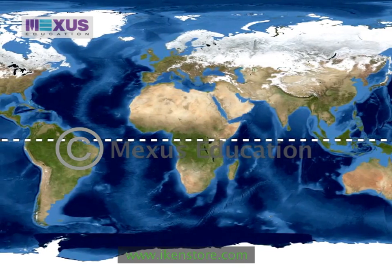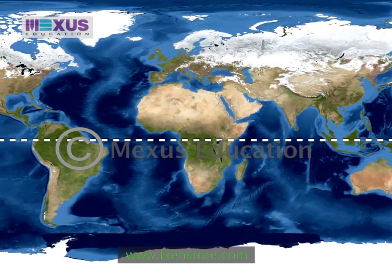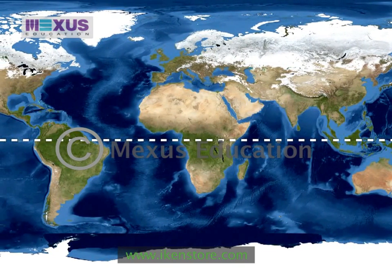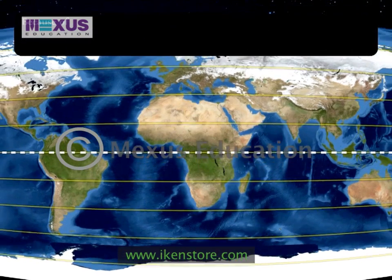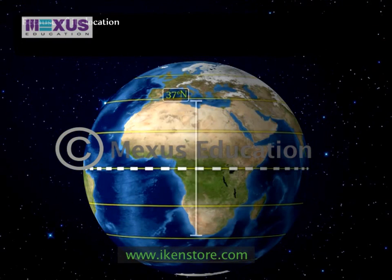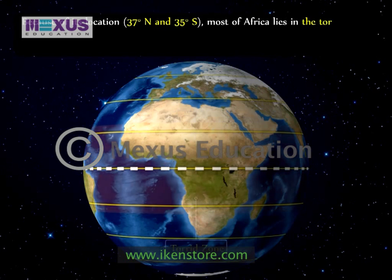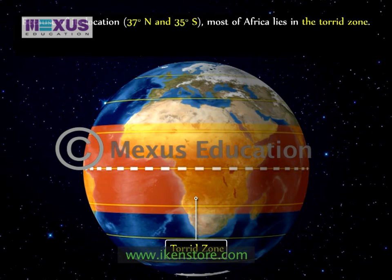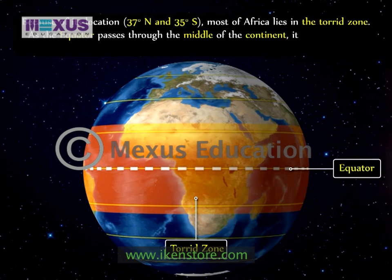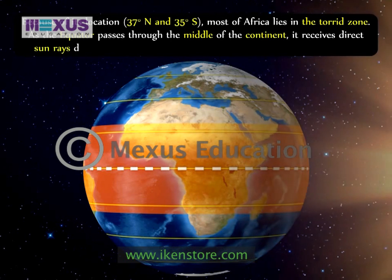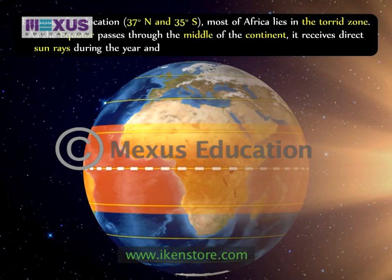There are four main factors that affect the climate of Africa. The first is latitude. Because of its location between 37 degrees north and 35 degrees south, most of Africa lies in the torrid zone. As the equator passes through the middle of the continent, it receives direct sun rays throughout the year, hence most of Africa experiences hot climate throughout the year.